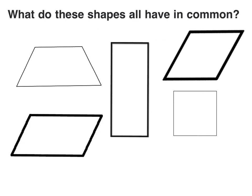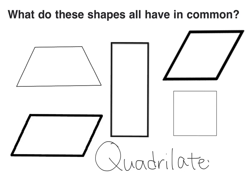By looking at all of these shapes, what do they all have in common? These shapes all seem to have four sides, which makes them quadrilaterals. Quadrilaterals are simply shapes that have four sides — quad means four, and lateral just means sides.